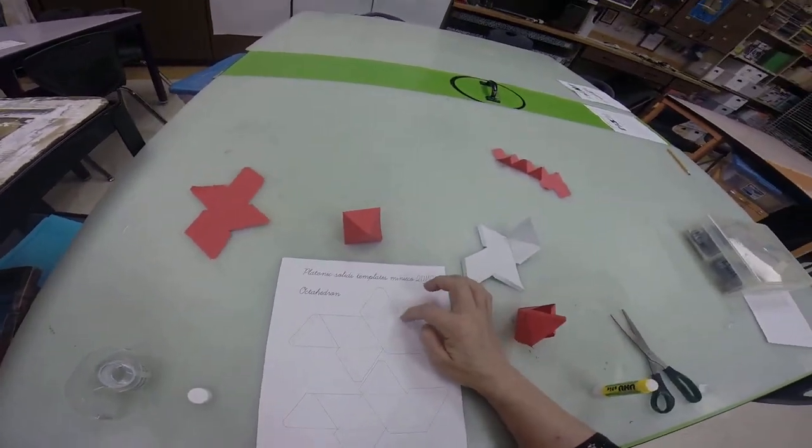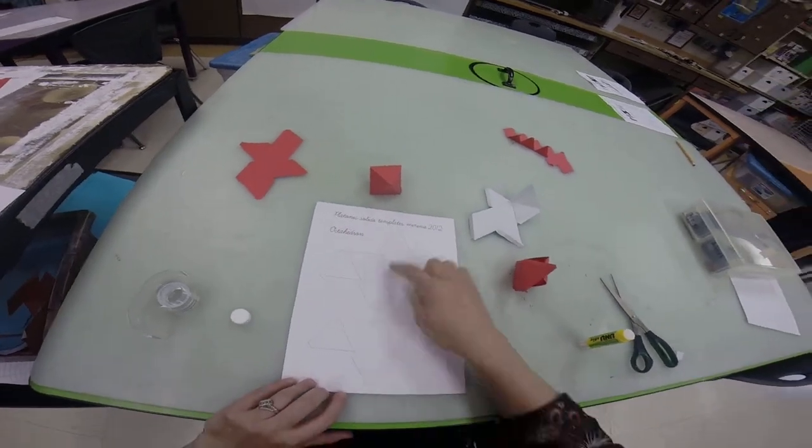This one's a little easier to cut out. There's not as many tricky spots. Just cut out the outside and there are two to a page.